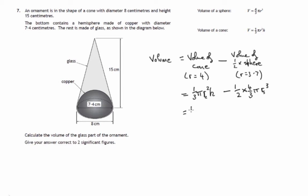So let's substitute values. We've got a third times pi times the radius of the cone, which we said was 4, times its height, which is 15.